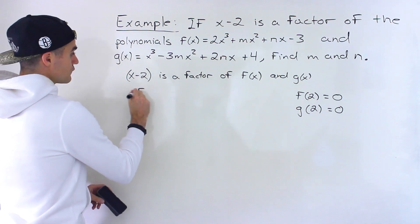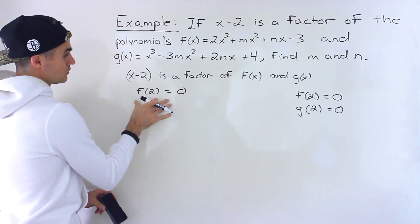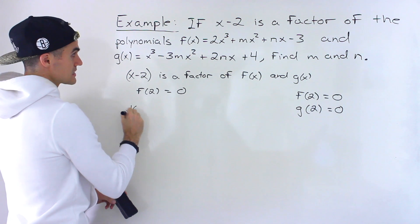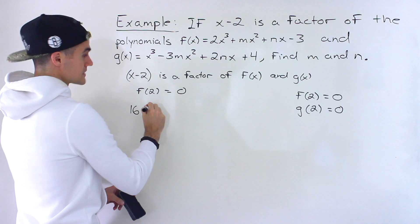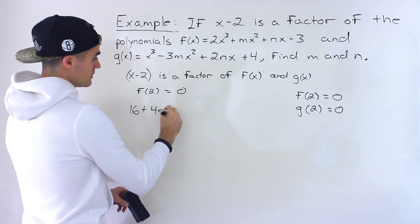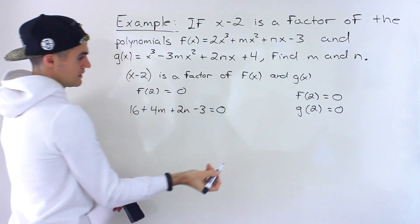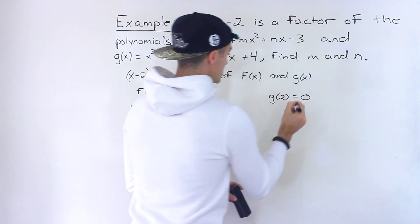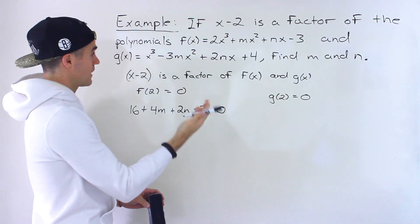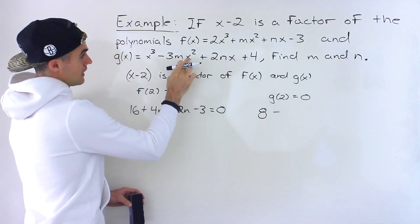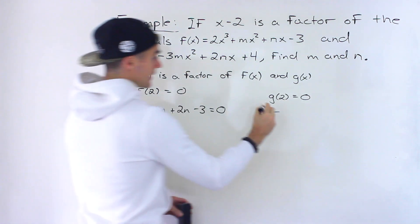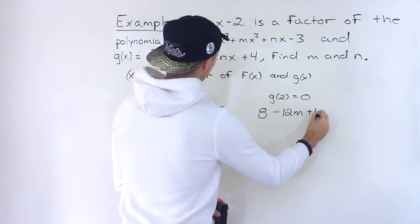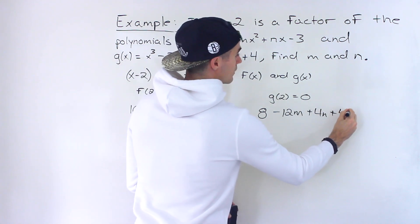From those two statements we can create two equations, because we're solving for two unknowns. So if f of 2 equals 0, we plug in 2 for x: 2 to the power of 3 is 8, times 2 is 16, plus 2 squared is 4 times m giving 4m, plus 2 times n giving 2n, minus 3 equals 0. That's one equation. For g of 2 equals 0, we plug in 2: we get 8 minus 4 times 3m giving negative 12m, plus 4n plus 4 equals 0.